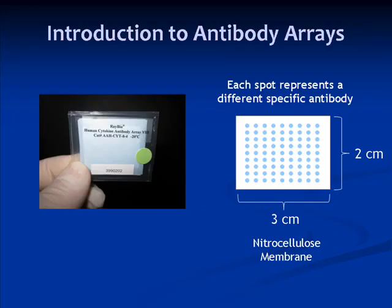Antibody arrays are small nitrocellulose membranes printed with multiple different antibodies in a grid layout. Each antibody spot is specific for a different protein, and there may be up to 100 different antibodies spotted on one membrane. This technology enables the researcher to detect multiple proteins in one small sample aliquot.